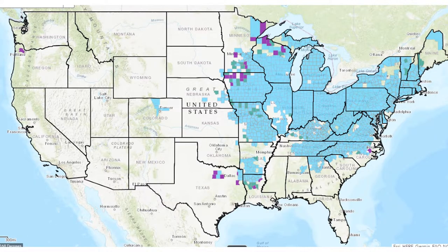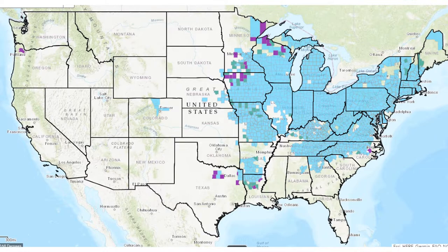This is where we're lucky. Dallas has a greater variety of tree species and ash trees only make up a small percentage. This slide shows counties in Texas that are under quarantine from the Texas Department of Agriculture.